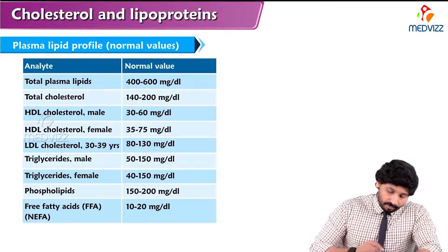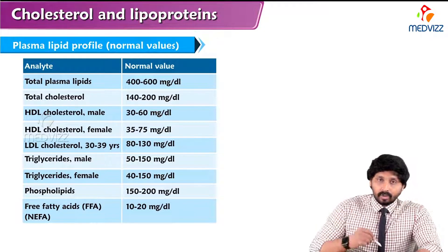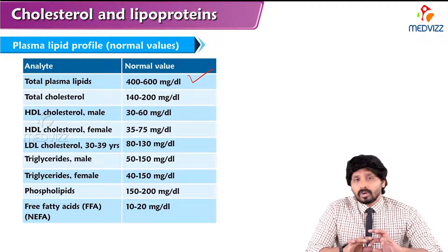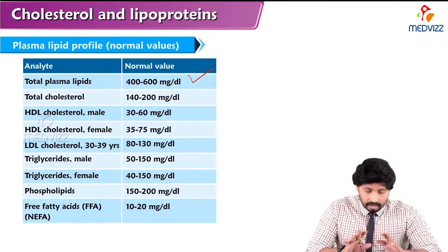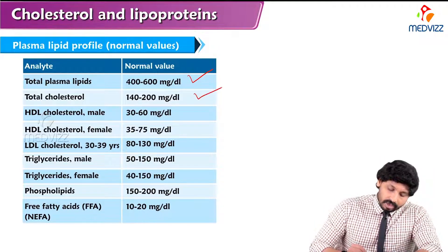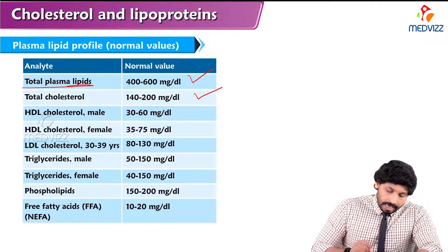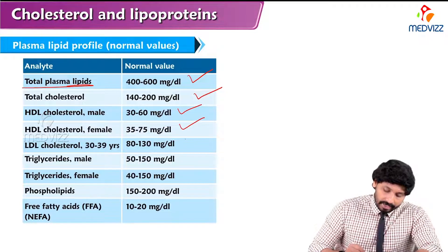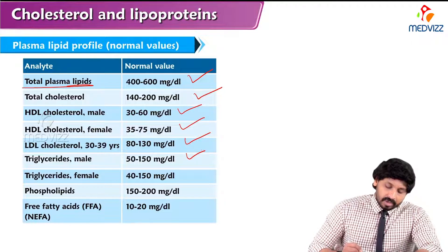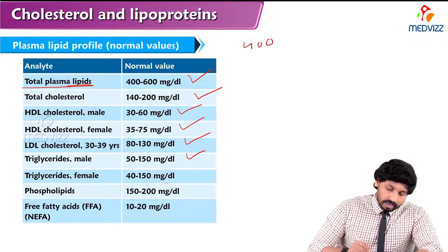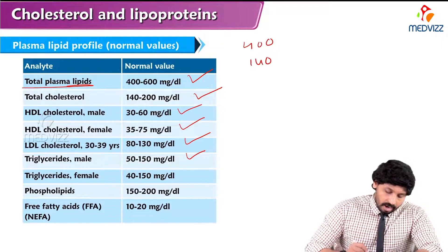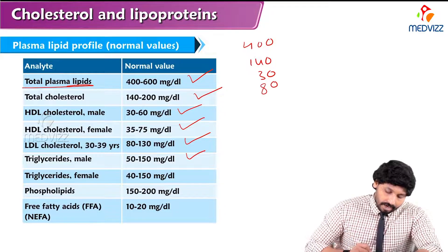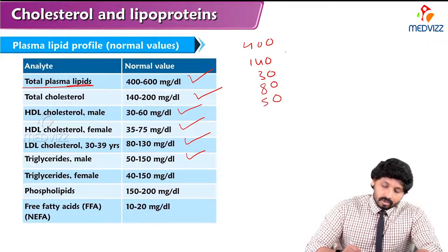Looking at the plasma lipid profile and normal values: total plasma lipids are 400 to 600 mg/dL. Total cholesterol — which includes HDL cholesterol, LDL cholesterol, and phospholipids — is 140 to 200 mg/dL. HDL cholesterol in males is 30 to 60 mg/dL and in females 35 to 75 mg/dL. LDL cholesterol is 80 to 130 mg/dL and triglycerides are 50 to 150 mg/dL.